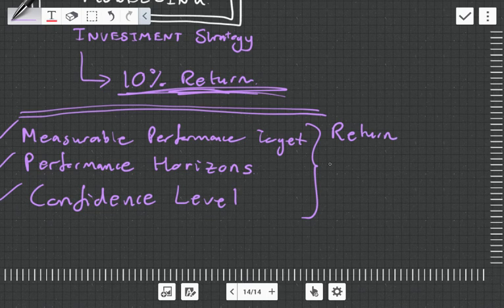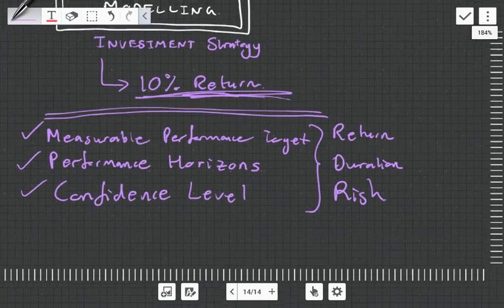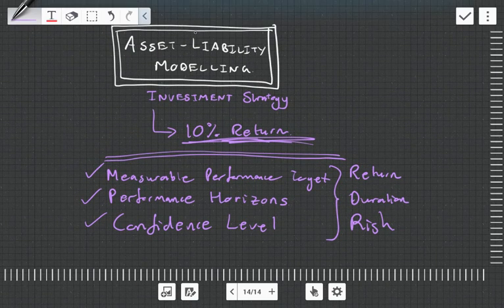We can basically put this in simple English: return, duration, and risk. Now, what was the big breakthrough in investment strategy? What did actuaries do that none of the other professions was thinking about? They looked at the liabilities.